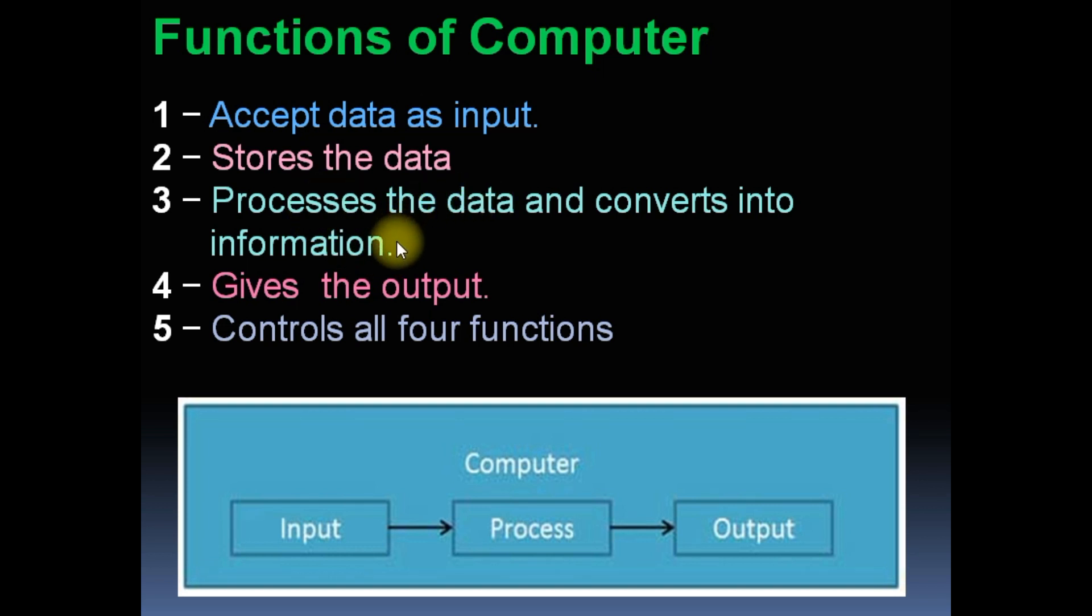And process the data and converts into information. Raw figures are processed and then it becomes information. Then gives the output. After processing, it gives the output. Then controls all four functions. These three functions are controlled. That is the functions of computer: input, process and output.